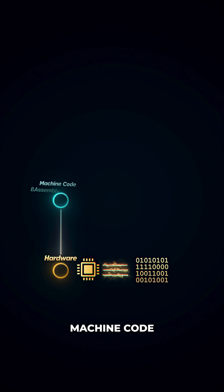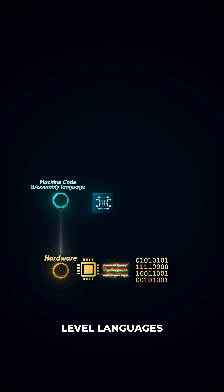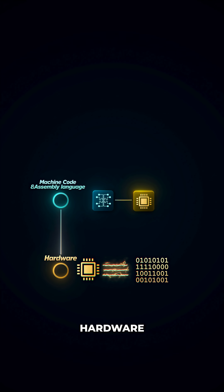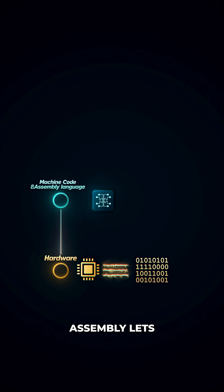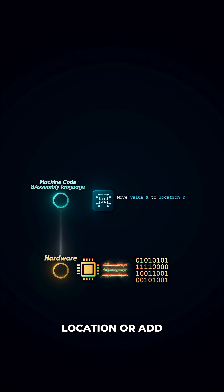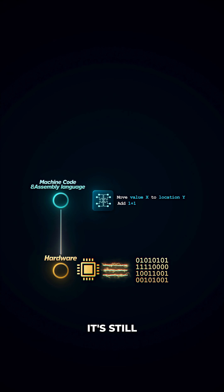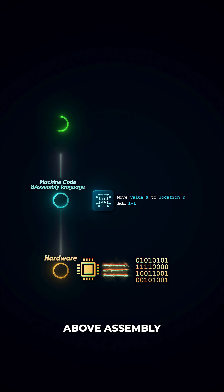On top of the hardware sits machine code and assembly language. These low-level languages communicate directly with the hardware, providing our first level of abstraction. Instead of manipulating electrical signals, assembly lets you write instructions like move this value to that memory location or add these two numbers. It's still incredibly detailed work, but it's human-readable.